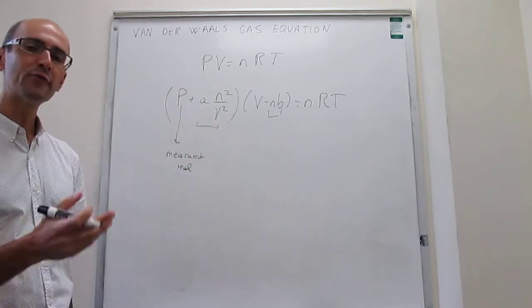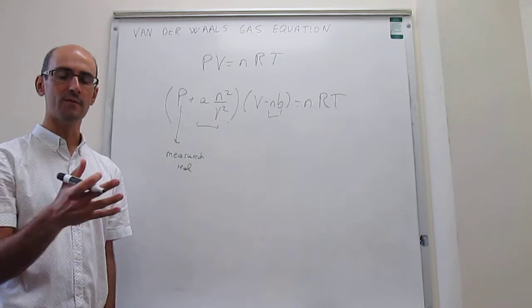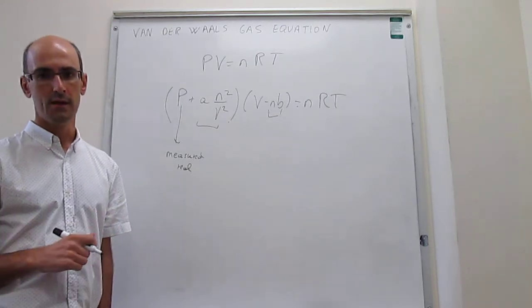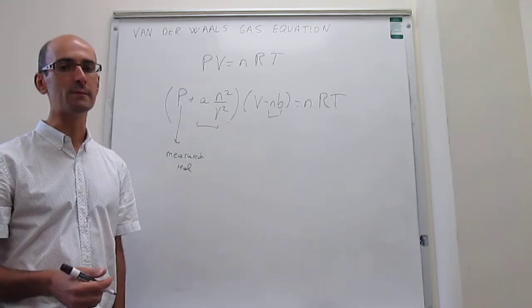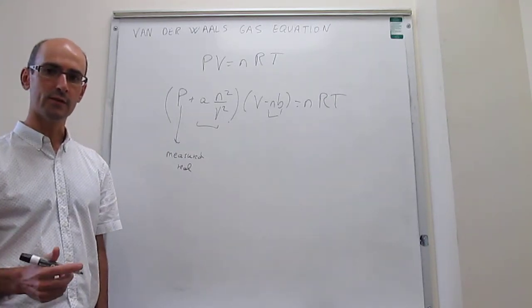Those constants A and B are different for each gas. So the constants A and B would be different for oxygen, nitrogen, methane, CO2, helium, any of the gases. And they can be determined experimentally. Okay? Now, let's try to see then what the corrections try to do.